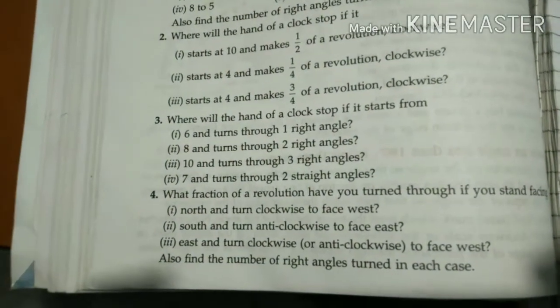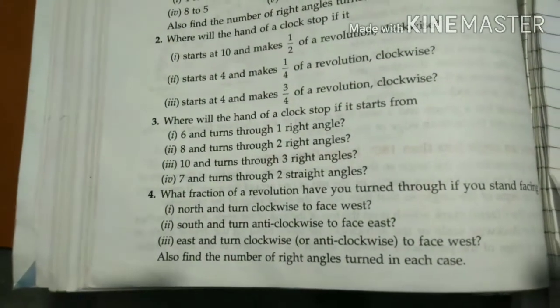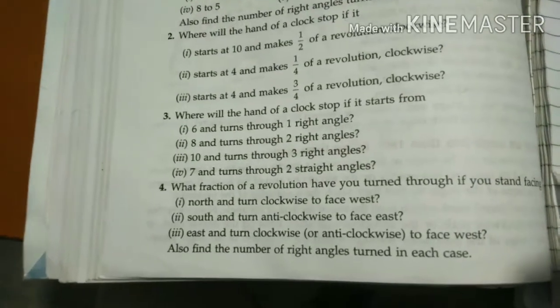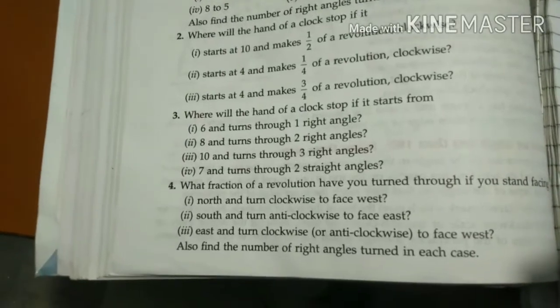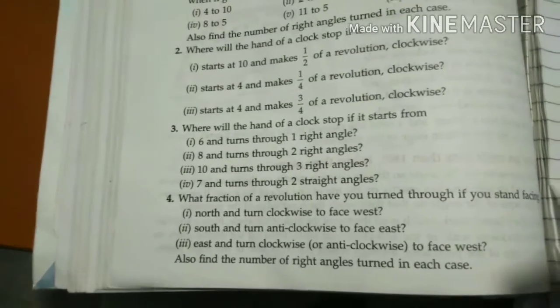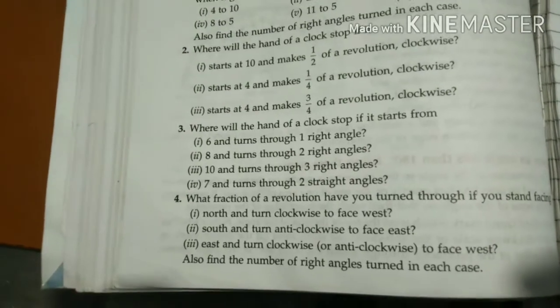Question number 3: where will the hand of a clock stop if it starts at point 6 and turns through one right angle? One right angle means 3 points, two right angles means 6 points, three right angles means 9 points, and four right angles means 12 points.